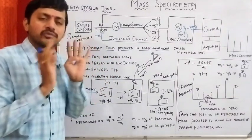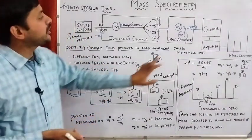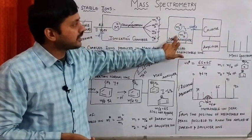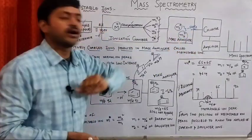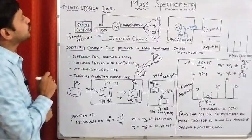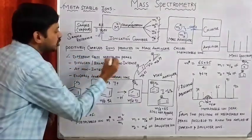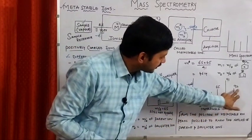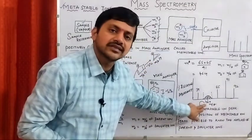To identify metastable ions, we need to identify the phenomena where positive ions and radical cations are involved in further fragmentation in the mass analyzer. Looking at the properties of metastable ions, these are different from the normal ion peaks. For example, normal peaks are at m/z 92, 91, 65, 39 — whereas 46.4 is commonly called a metastable ion peak.